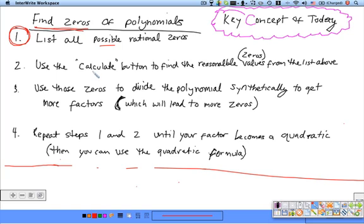Then what we're going to do, step two, is we're going to use the calculate button in your calculator to find the zeros from this list. And then we're going to use those zeros to divide the polynomial synthetically, which will lead us to factors, which then will lead us to more zeros. And then we keep repeating steps one and two, calculating until we get down to a quadratic. Then we can use quadratic formula to solve the rest. But keep in mind what we're doing. We're finding zeros. So factors will lead us to zeros. You should probably pause the video, maybe take these notes down right here. And then we'll do a problem.